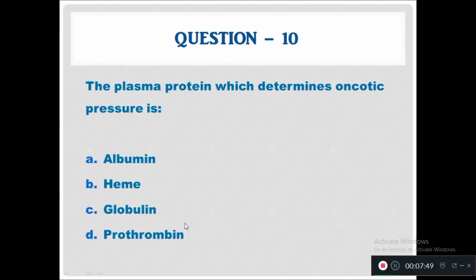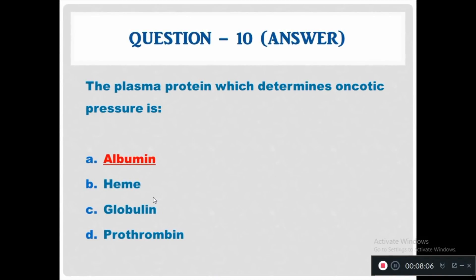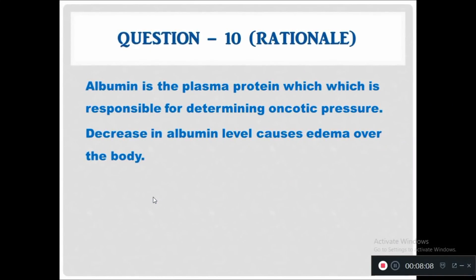Question 10: The plasma protein which determines oncotic pressure is — albumin, hemoglobin, globulin, or prothrombin. The answer is albumin. Albumin is the plasma protein responsible for determining oncotic pressure. Any decrease in albumin level causes edema over the body.